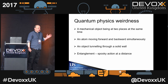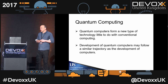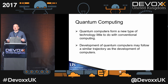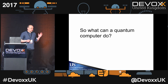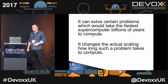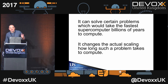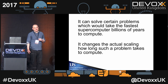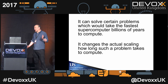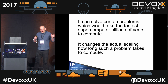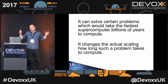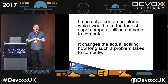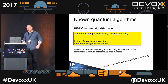So what quantum computers are is machines where we're trying to tame these quantum effects. Quantum computing has nothing to do really with conventional computing — it's an entirely new type of technology, and the development of quantum computers will possibly follow a very similar trajectory as conventional computers. Quantum computers can solve certain problems where even the fastest supercomputer in the world may take billions of years to calculate. It changes the actual scaling — how long it takes to solve a certain problem. That's what makes quantum computers so powerful, because it changes the scaling of how long an algorithm takes.